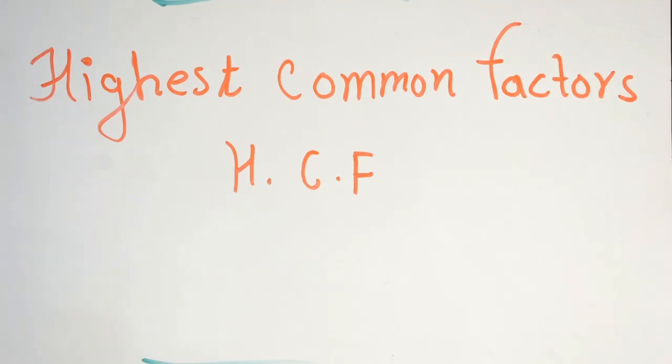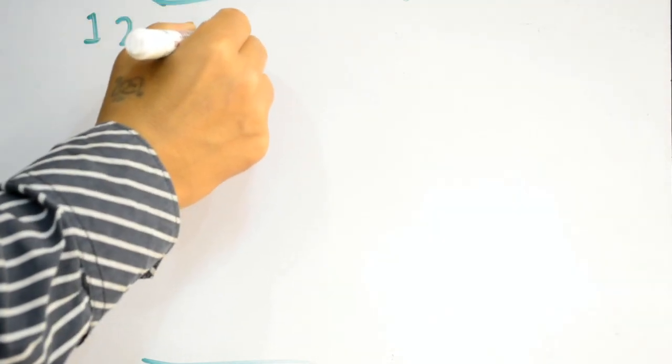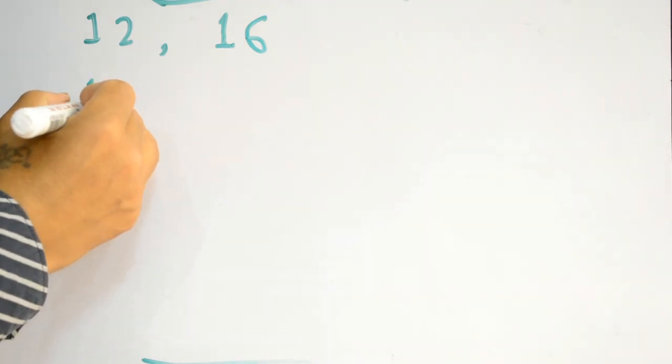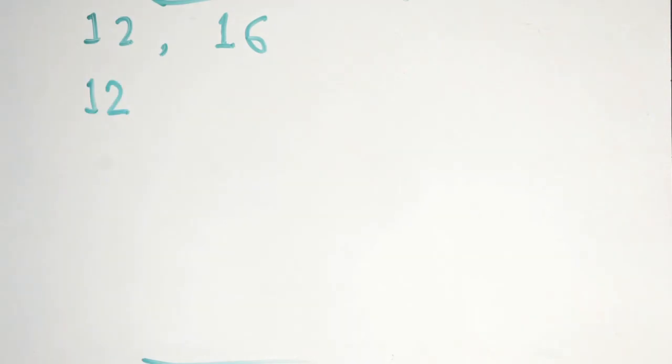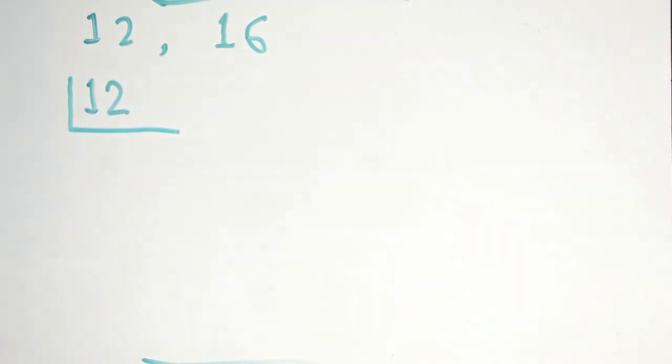Hello friends, today we will learn how to find HCF by prime factorization. Let's look at the numbers 12 and 16. At first, write the first number 12, write the symbol like this, and now divide.